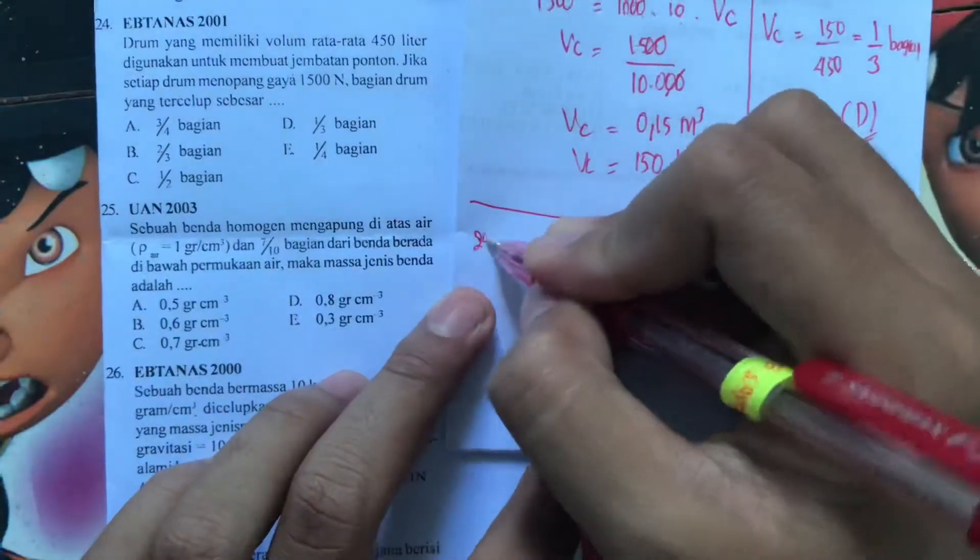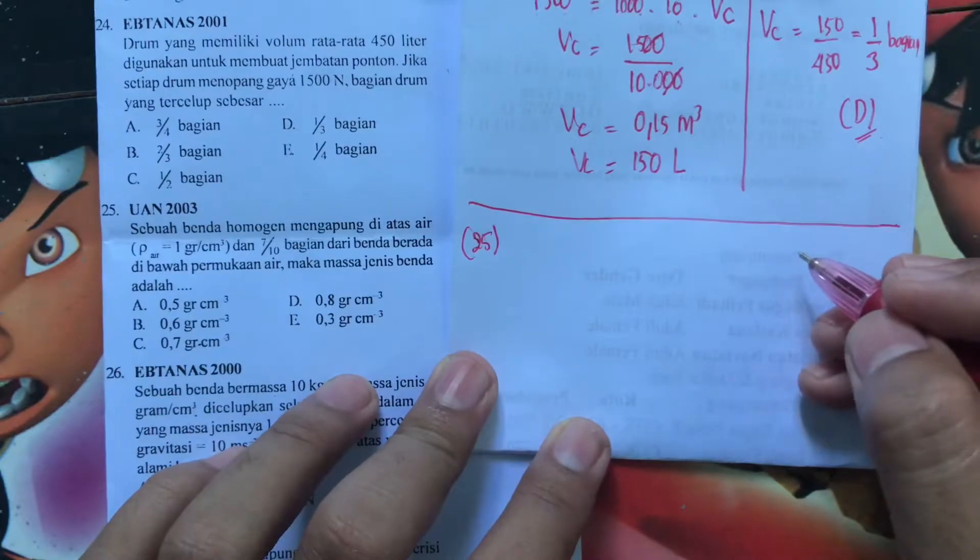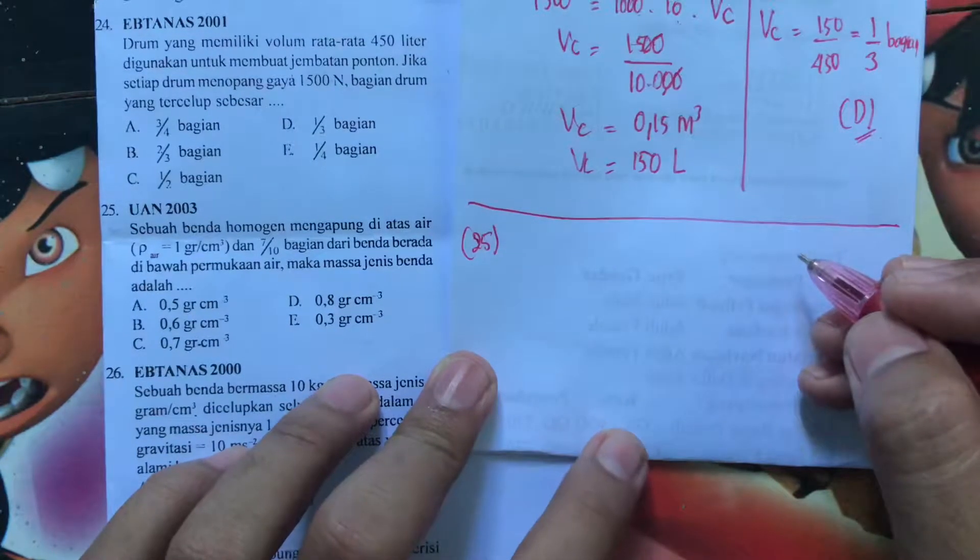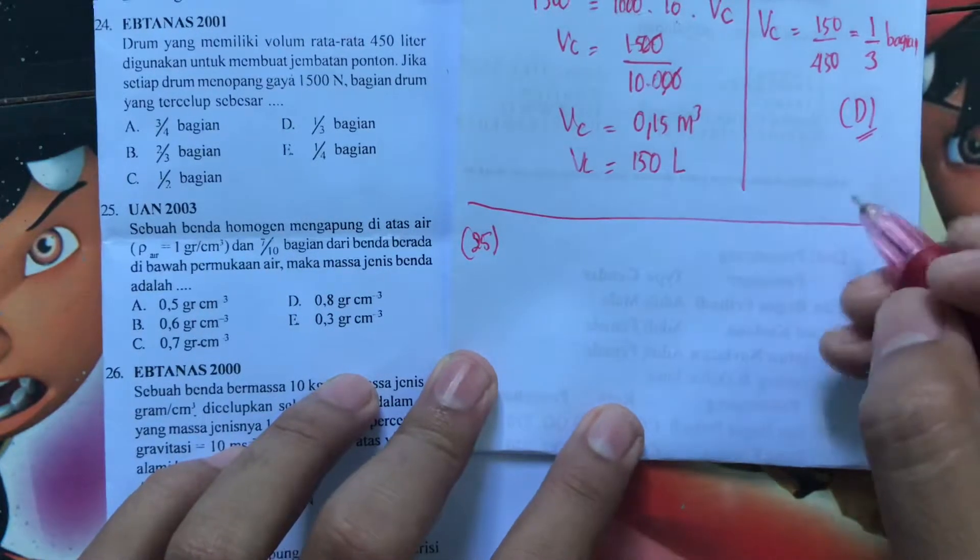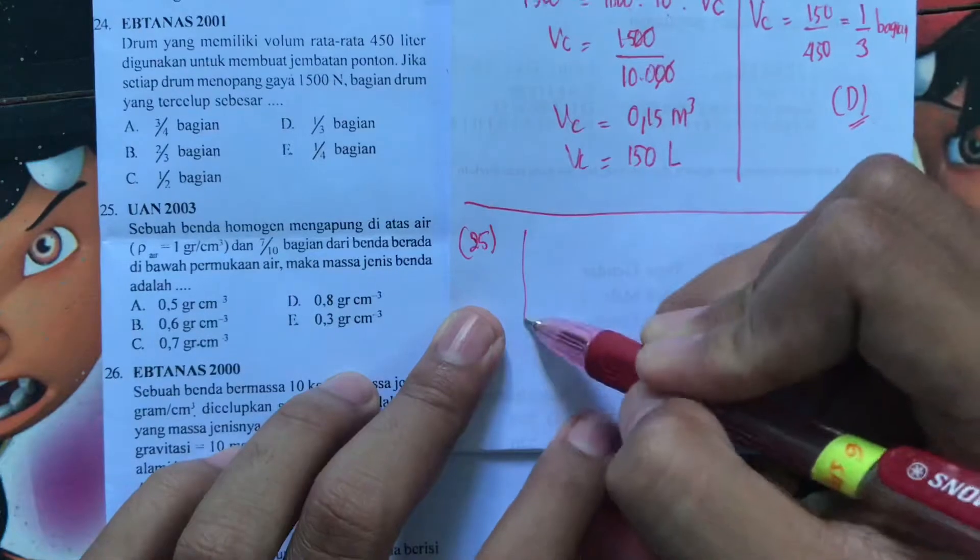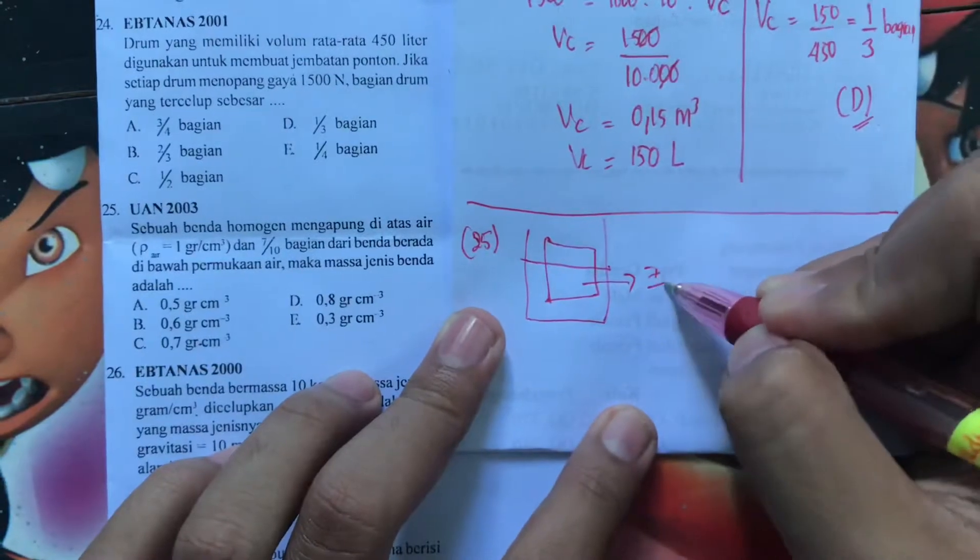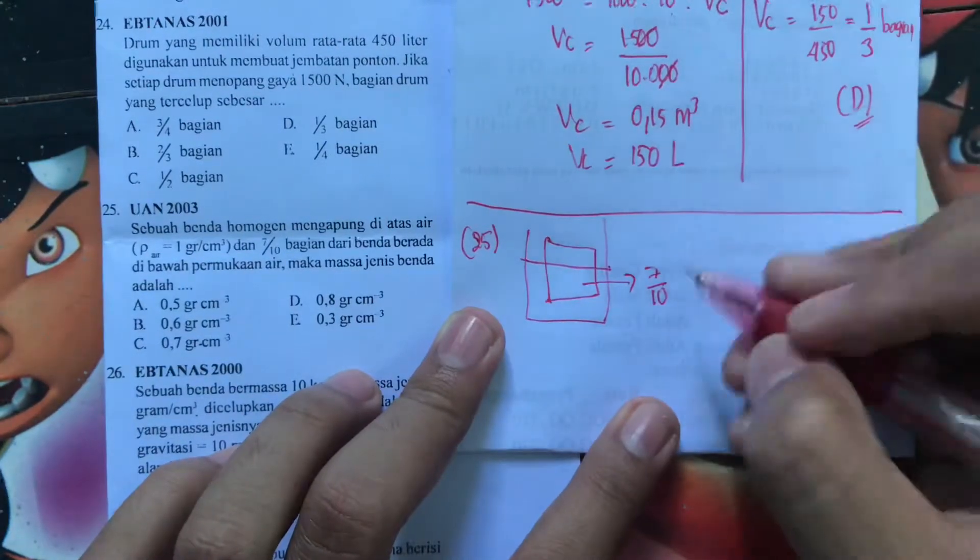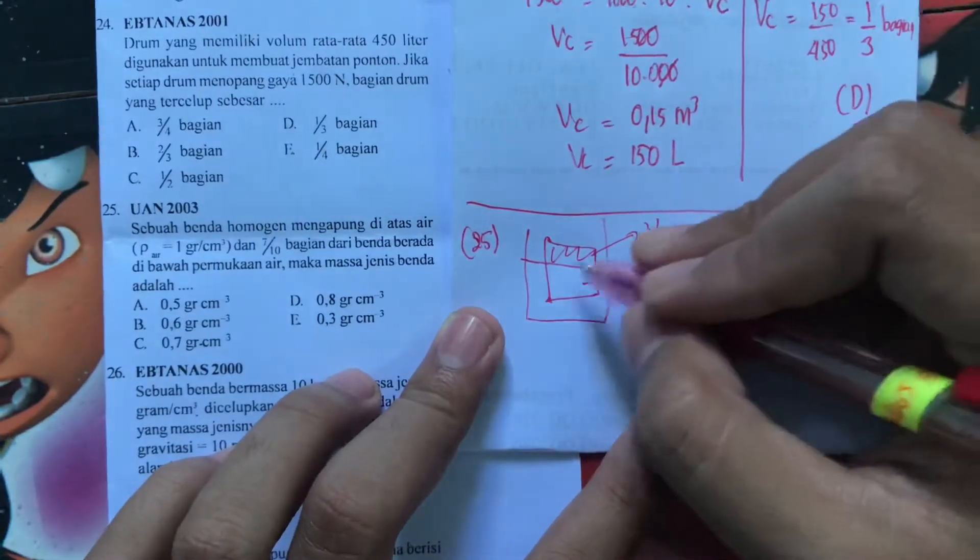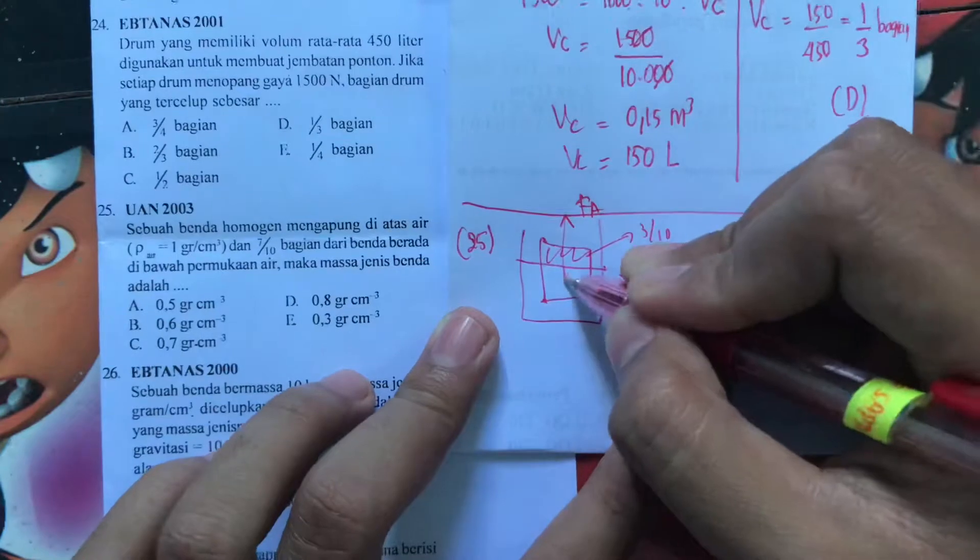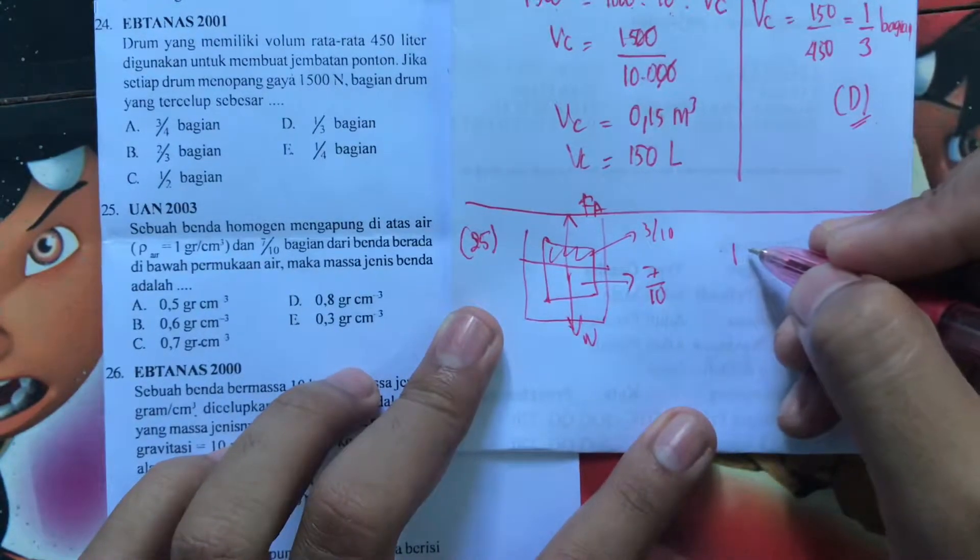Sekarang ke nomor 25. Sebuah benda homogen mengapung di atas air. Rho air 1 gram per cm kubik dan 7 per 10 bagian dari benda berada di bawah permukaan air. Maka masa jenis benda adalah. Ilustrasinya kan seperti ini. 7 per 10 bagian di bawah permukaan. Ini berarti disini sisanya adalah 3 per 10. Ingat, kalau yang kita pakai untuk Archimedes adalah volume yang tercelup. Yang ditanyain apa? Masa jenis benda.